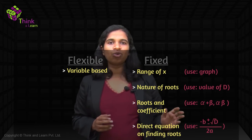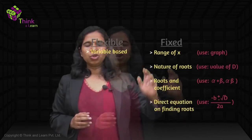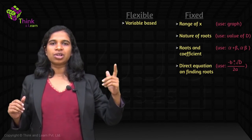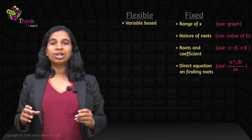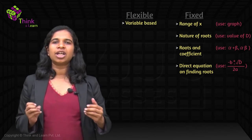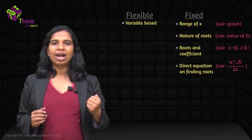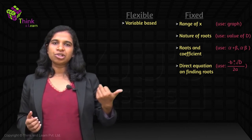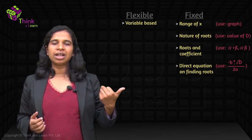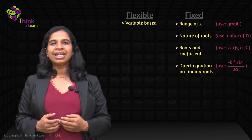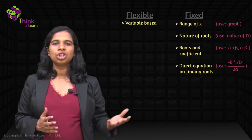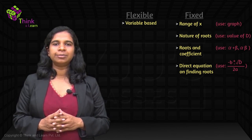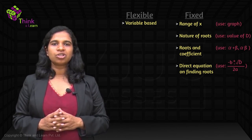These are the only four types of questions you will get. Use a graph whenever it is about the range of where x lies. Use the value of d whenever it is about the nature of the roots — are they real, are they complex? Use alpha plus beta and alpha times beta whenever you are given something about the roots and asked something about the coefficients. And use the quadratic formula if you are directly given an equation and asked to find the roots. Let us now start solving these questions.